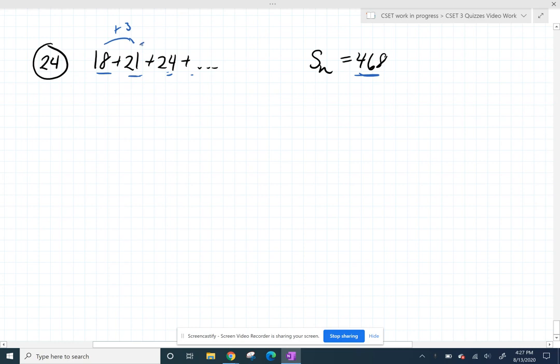So we can see that we keep adding 3 every time, which is, since we're adding the same thing, that's the definition of an arithmetic sequence.